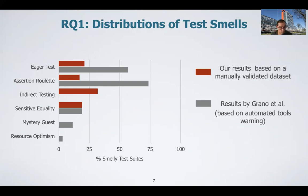For the first research question, I am reporting the results of our study based on manually validated data versus the results reported in the related work for the same test smells, but based on warnings raised by the detection tool without manual validation. As we can observe, when manually analyzing the results, the number of test smells is much smaller than what has been reported in the past. In particular, eager test and Narcissistic Roulette account for less than one-third of what was previously reported. We also found that the GPD tool is not able to detect any indirect testing and has a large number of false positives for mystery guest and resource optimism.